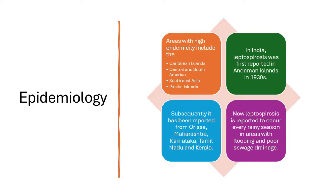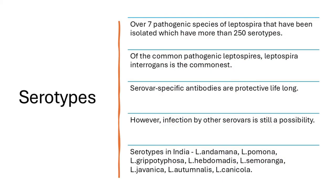Looking at epidemiology, the areas highly endemic for leptospirosis include the Caribbean islands, Central and South America, Southeast Asia especially India, and the Pacific islands. In India, leptospirosis was first reported from the Andaman Islands in the 1930s, subsequently from Orissa, Maharashtra, Karnataka, Tamil Nadu, and Kerala. It is now endemic and reported in any season in areas with flooding and poor sewage drainage, especially agricultural areas.